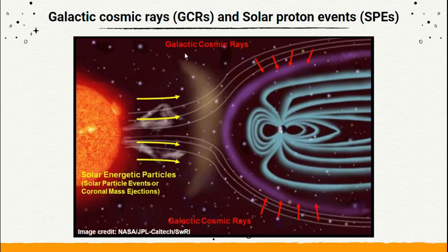However, the most energetic ones may come from extragalactic sources, whereas the solar proton events are caused by the acceleration of protons either by solar flares or by coronal mass ejections.